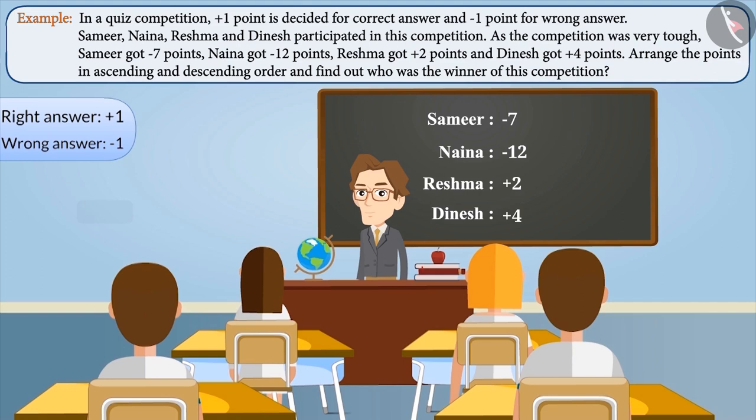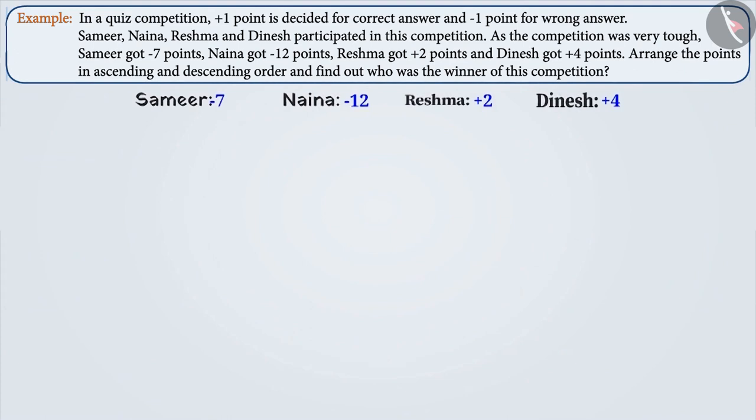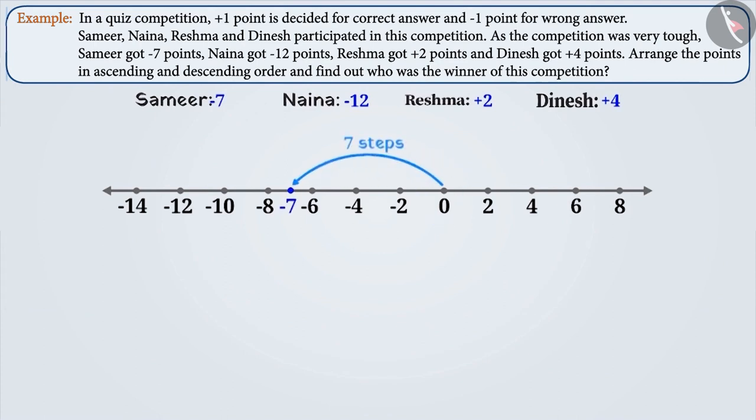To arrange in some order, we have to compare the points of Samir, Nayana, Reshma and Dinesh. For this, let us express the points of all of them on a number line. On the number line, we will express minus 7 at a distance of 7 steps to the left of 0, minus 12 at a distance of 12 steps to the left of 0, plus 2 at a distance of 2 steps to the right, and plus 4 at a distance of 4 steps to the right of 0.